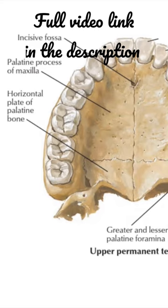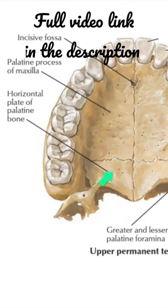The hard palate presents a bony framework formed by the palatine process of the maxilla in front and the horizontal plate of the palatine bone behind. This is the horizontal plate of the palatine bone.